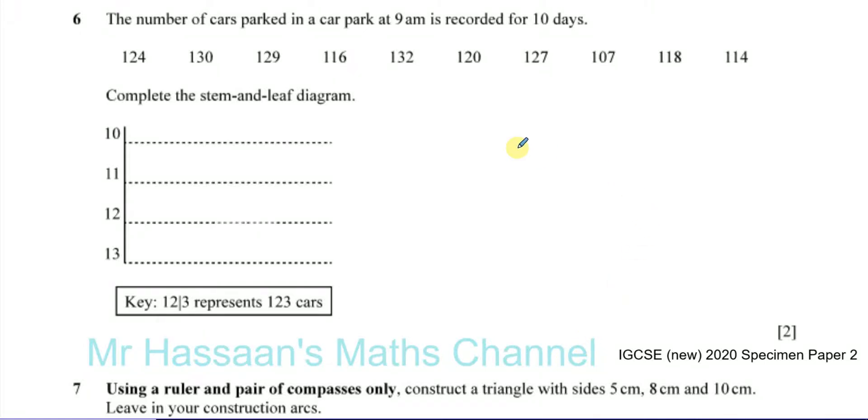Okay, now for question number six from the specimen paper for 2020. This is something which is new in the IGCSE Cambridge syllabus, and it's something to do with statistics, and it's called stem and leaf diagrams.